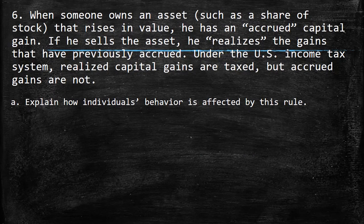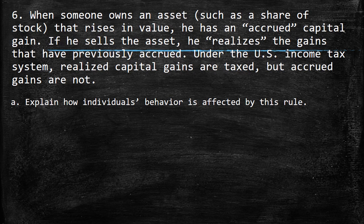The 6th question says: when someone owns an asset, such as a share of stock that rises in value, what we call that is an accrued capital gain. If he sells the asset, he realizes the gains that have previously accrued. Under the U.S. income tax system, realized capital gains are taxed, but accrued gains are not.